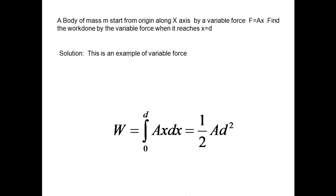The second question: a body of mass m starts from the origin along the x-axis acted on by a variable force f = ax. Find the work done by this variable force when it reaches x = 2. Since the force is variable, the simple formula W = Fs will not work. We apply the variable force formula: W = ∫F dx = ∫ax dx, integrating from 0 to d, which gives W = ½ad².